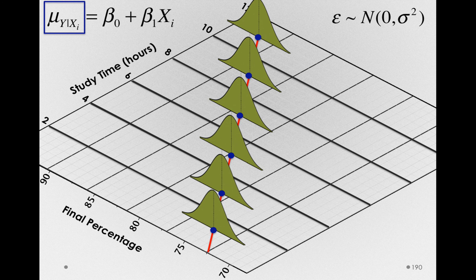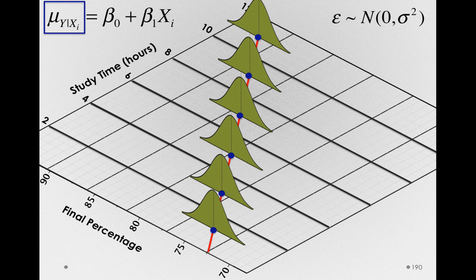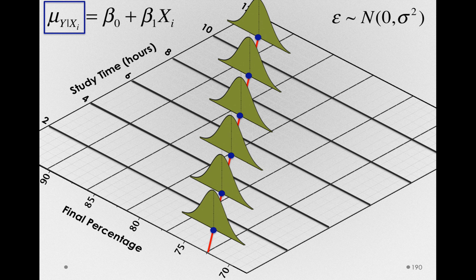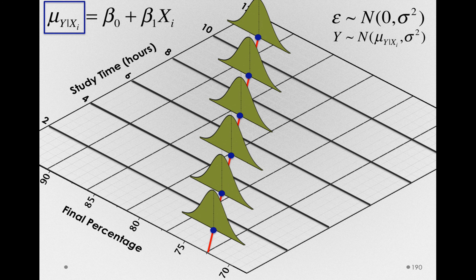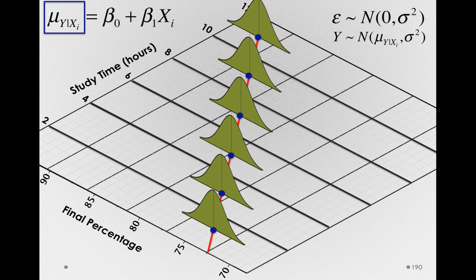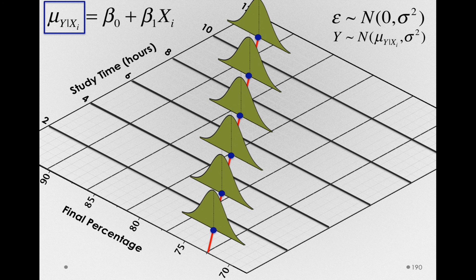It's predicting the mean of all individuals conditional on a particular level of x. So with this notation of the conditional mean, we can also write that the y-scores are distributed normally with a mean of mu sub y given xi with a constant variance.